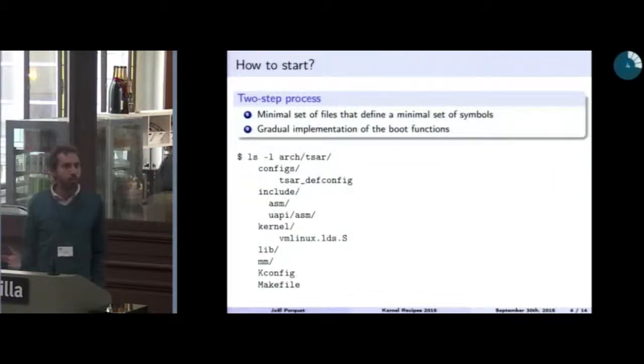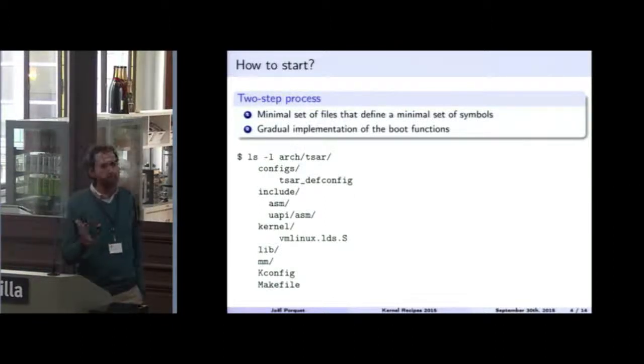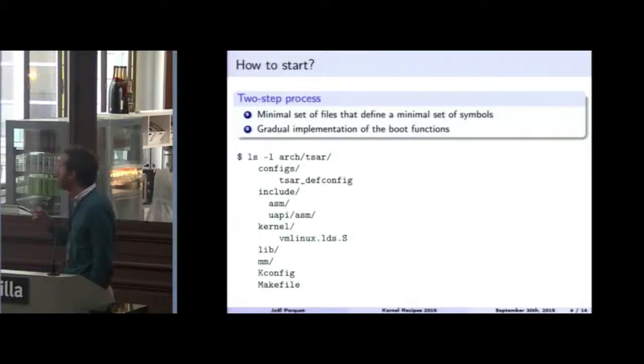So how to start a new port? A new port is a two-step process. First, there must exist a minimal set of files that define a minimal set of symbols, so functions, variables, macros, and so on, for the kernel to even compile. And once the kernel compiles, and we can start running it on the targeted hardware, then actually we can notice that the boot sequence is very sequential, which means that we can leave many functions empty at first and implement them gradual until we reach the init process. And we know that it's good.